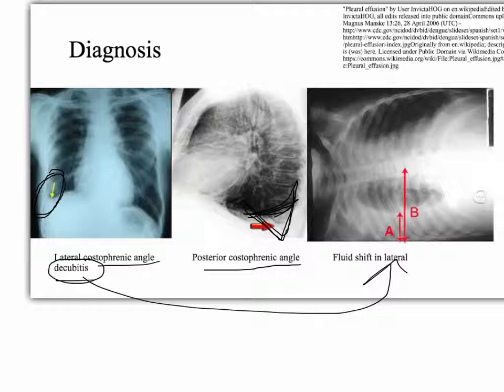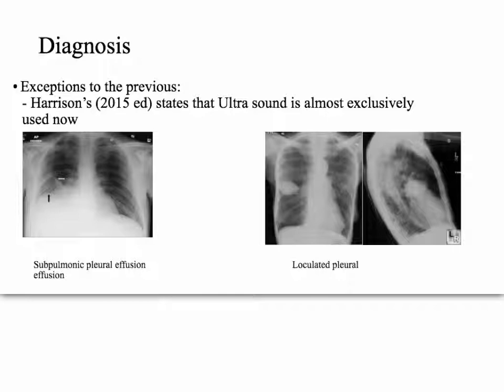The biggies where you won't see a fluid shift are subpulmonic pleural effusion and loculated pleural effusion. With subpulmonic effusion, the diaphragm looks slightly elevated — you might think there's hemiparalysis of the diaphragm. But the key clue is that the peak of what you'd think is the diaphragm is actually shifted to the left, and that tells you it's really liquid trapped underneath the base of the right lung.